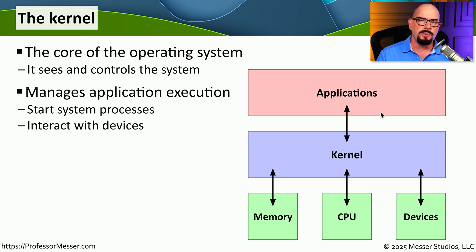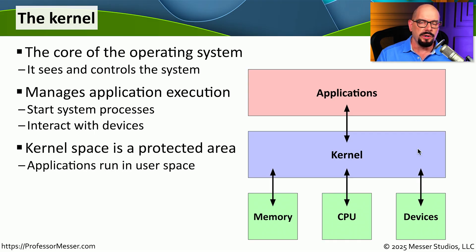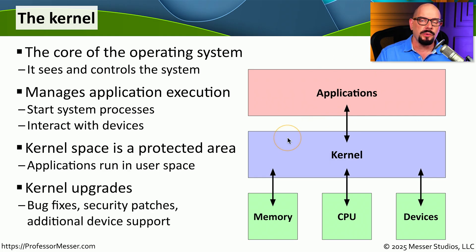The kernel manages the most important aspects of your operating system. When starting your system, it manages system processes and interacts with devices and hardware connected to your computer. Because the kernel is so important, it has its own area of memory called kernel space, which is separate from user space where applications run. You may need to upgrade the kernel for new features, bug fixes, security patches, and other important changes.